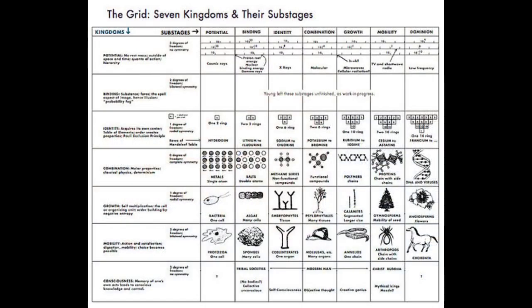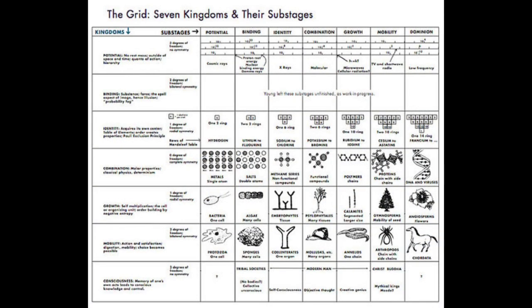Let's glance at our grid so we can see where we left off. So this is the grid. We're down at The Animal Kingdom, which is the next to last one.